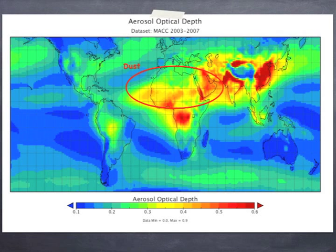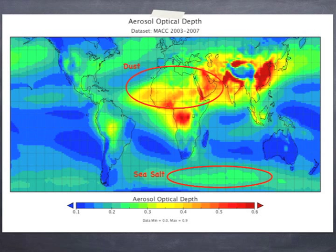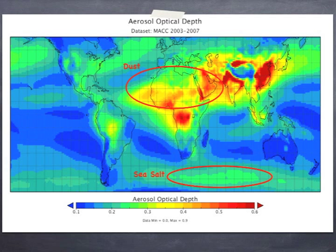Another natural source comes from the ocean. When strong winds blow over the ocean, they can lift up small droplets. These droplets can then often evaporate, leaving sea salt in the atmosphere — something called sea salt aerosol.